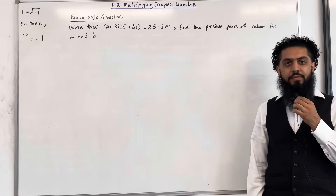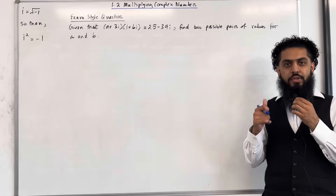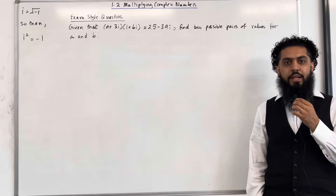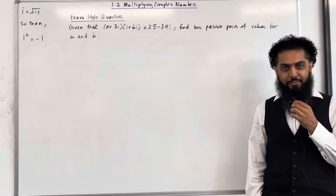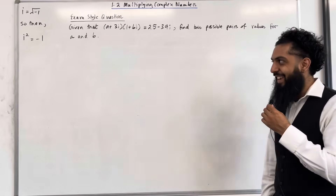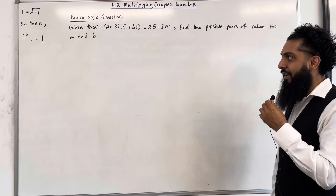Welcome back. In this teaching video, I'll be looking at 1.2 multiplying complex numbers. 1.2 represents Chapter 1, Section 2 of the Core Pure 1 textbook. Let's have a look at the key fact of this section.